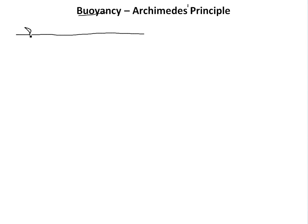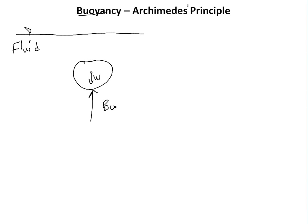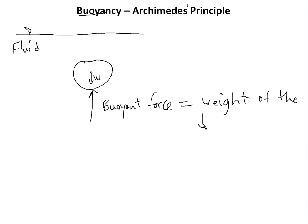Basically, let's say if you have a fluid and then you have an object inside it — just a random object. Basically the force acting on it is the self-weight, and then he proposed that every object has a buoyant force acting on it: buoyant force equal to the weight of the displaced fluid.